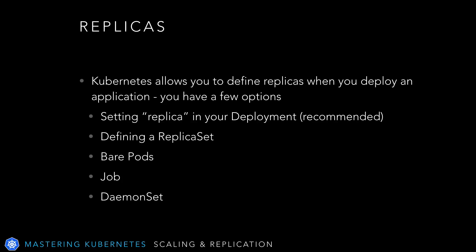Kubernetes gives you a variety of options to define how a pod should scale. By far the most robust, flexible, and frequently used is setting the replica options in your deployment. You can also define a replica set, deploy multiple bare pods, or define a job — useful if you're doing a niche form of batch processing — or a daemon set, if you're looking to replicate older software patterns like daemons. However, the dominant way of deploying a replica is to define the replica options in your deployment, and that's what we'll do today.